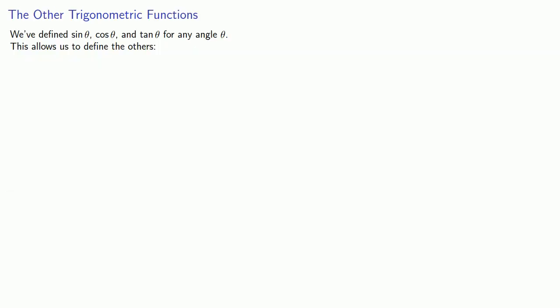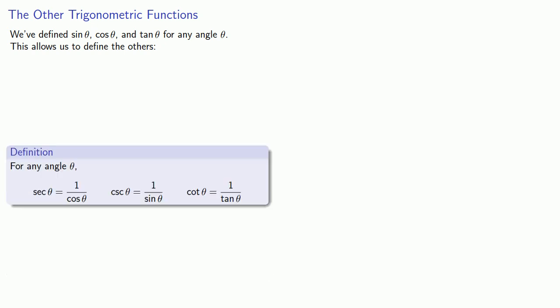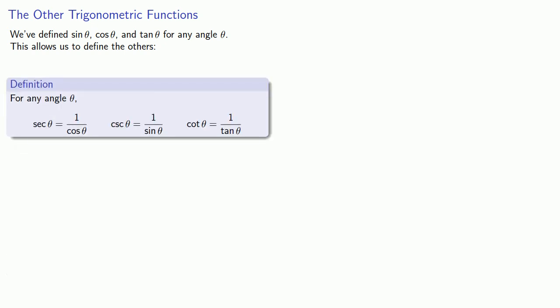Now we have defined sine, cosine, and tangent for any angle theta. The other trigonometric functions can also be defined in terms of sine, cosine, and tangent, and so this allows us to define the rest. For any angle theta: secant theta is 1 over cosine, cosecant is 1 over sine, and cotangent is 1 over tangent.